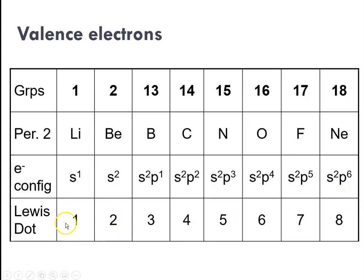So in their Lewis dot structures you would show electrons as dots because they're easier to draw than electrons, and you would show the number of valence electrons.